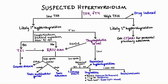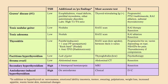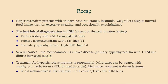Here's a summary table I made for you — you can print this out if you want. It's basically everything we talked about. To recap: hyperthyroidism shows up with anxiety, heat intolerance, insomnia, weight loss despite normal food intake. You can also see tremor, excessive sweating, and occasionally exophthalmos, particularly with Graves', which is the number one cause. The best initial diagnostic test is a TSH — it will help you determine whether you're dealing with primary or secondary hyperthyroidism, and it can rule out non-thyroid causes of overlapping symptoms.